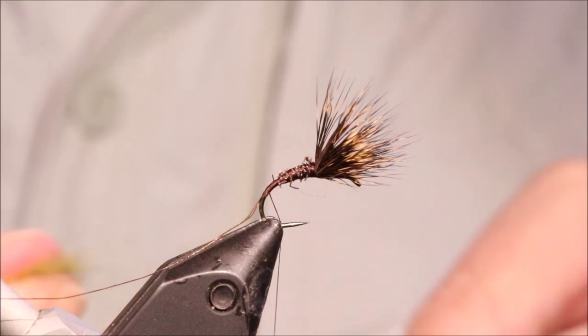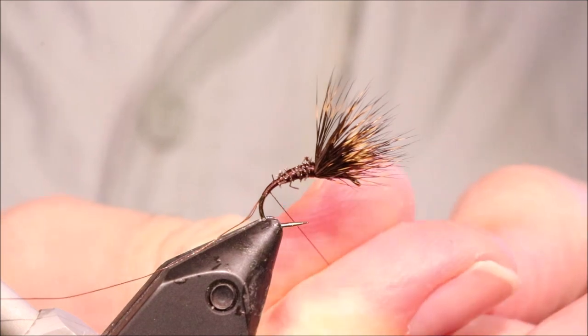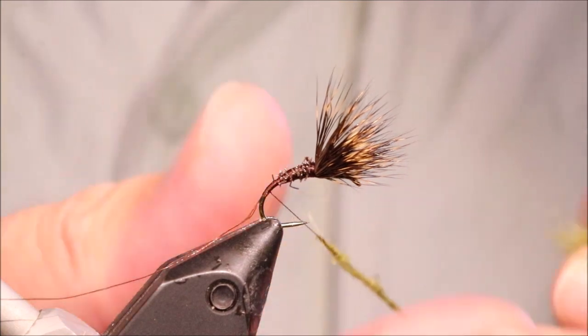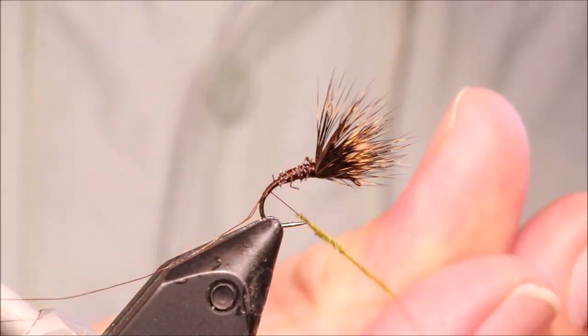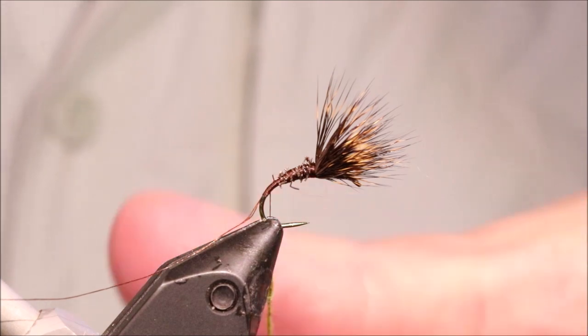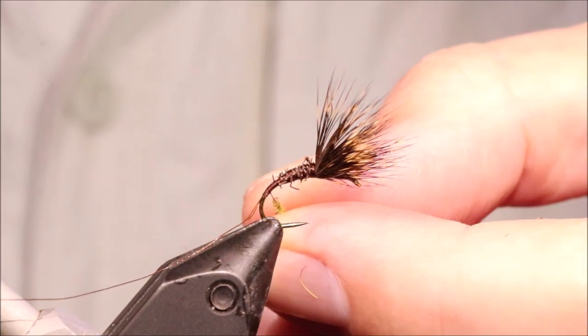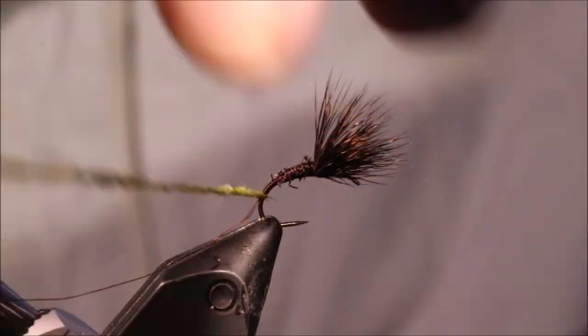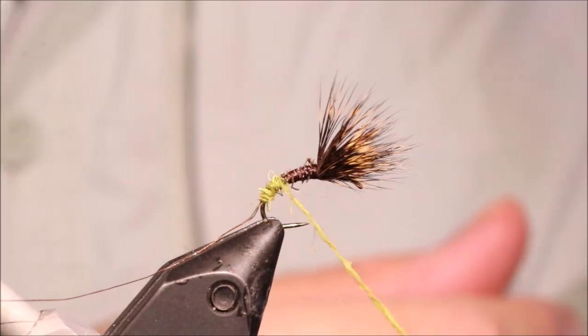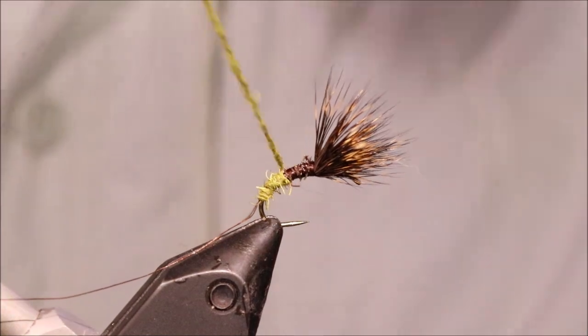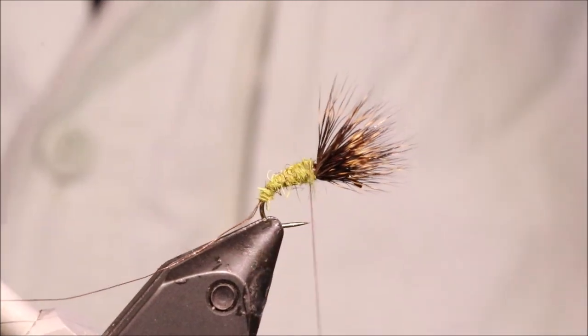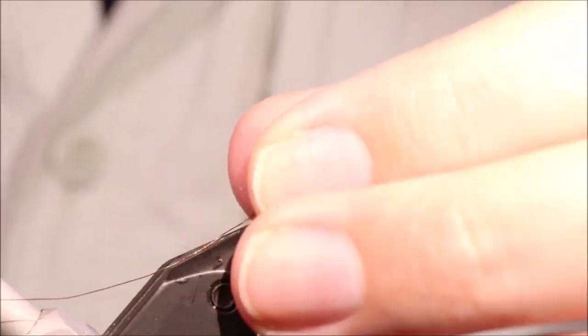I'm getting some olive dubbing here. Just going to dub this on. You don't need a ton, keeping this quite thin. The butts of the wing will give you enough taper anyway. I'm just going to come in around the bend here, just going to tighten that as I go. I'm just going to build that body all the way up. You can see there, the butts of that hair has given me all the taper that I need.